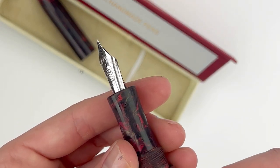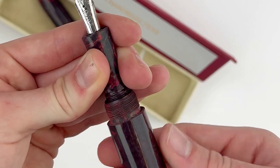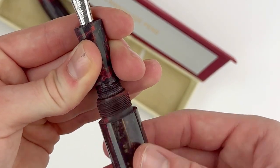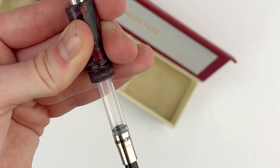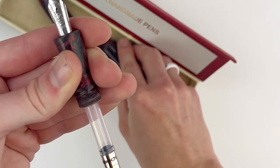It is fitted with a stainless steel nib, and it is a cartridge converter fountain pen. There's a converter already inside the pen, which you can get to by just unscrewing the barrel of the pen.